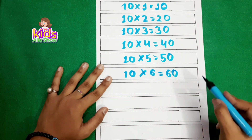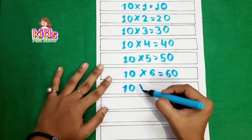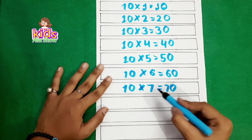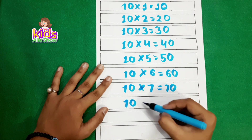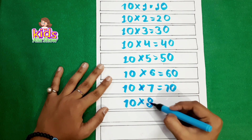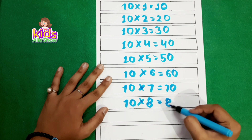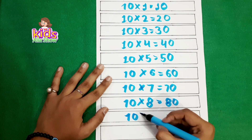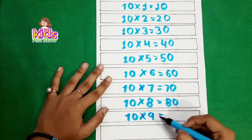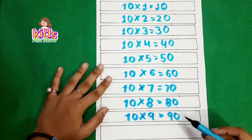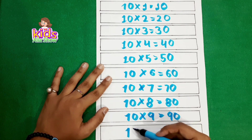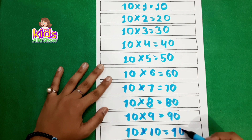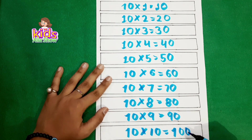Ten six is sixty. Ten seven is seventy. Ten eights are eighty. Ten nines are ninety. Ten ten is a hundred.